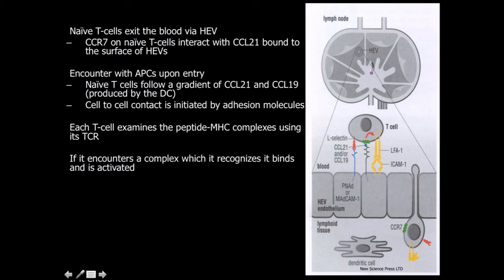Looking at this picture, we can see the T-cell right here. In orange we have the L-selectin. Here we see CCL21 or CCL19 binding, and the receptor associated with it in green, which is CCR7. Here's the LFA-ICAM integrin cell adhesion molecule interaction happening. And then this is showing the actual diapedesis — the actual squeezing through of the T-cell — as it goes into the lymph node and makes contact with the dendritic cell.